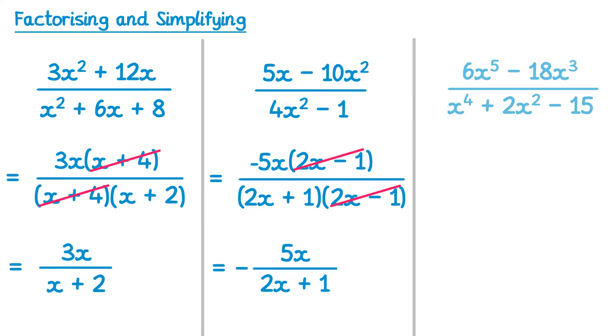And for this question here, we can factorise the top into a single bracket, the common factor is 6x³, so 6x³(x² - 3), and on the bottom if we use the substitution method where y = x², you'd end up finding that this factorises to (x² + 5)(x² - 3). We now have a common factor of x² - 3, which gives us 6x³/(x² + 5).